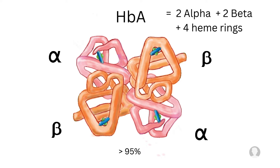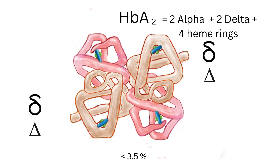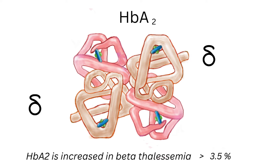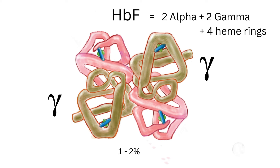The majority of adult hemoglobin is hemoglobin A, which is 2-alpha and 2-beta with 4 heme rings. A small percentage of adult hemoglobin is hemoglobin A2, which is 2-alpha plus 2-delta and 4 heme rings. Hemoglobin F is found mainly during fetal life, and it is a tough hemoglobin resistant to alkali and acid dilutions; it includes 2-alpha, 2-gamma, and 4 heme rings.